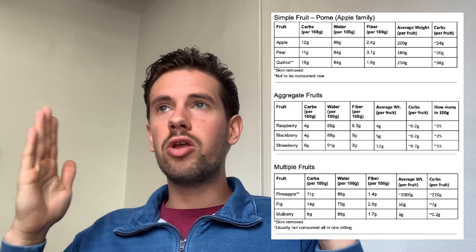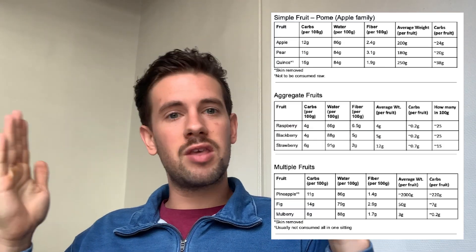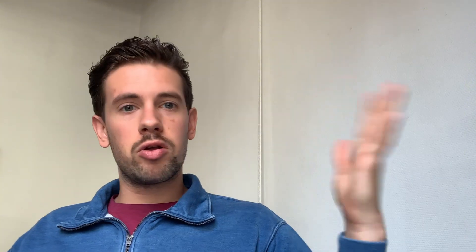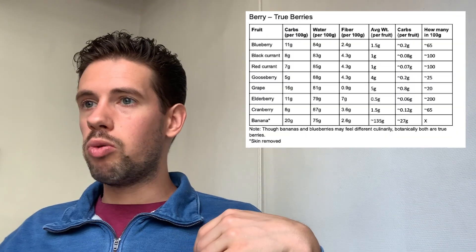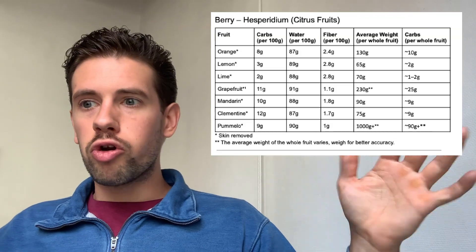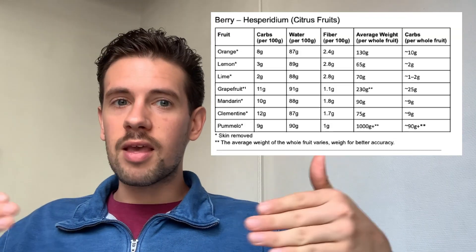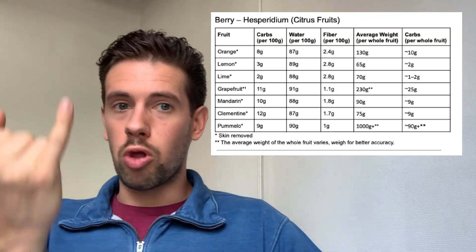I've taken that carbohydrate guide and sectioned it off in the botanical sense. When you go into this guide and look up stone fruit, or berries, or nightshades, or citrus fruits, you're going to see which foods are low carbohydrate and which line up with seasonality, because families and groups of fruits grow with the seasons.